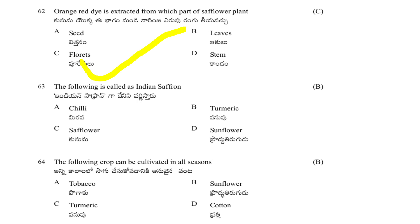Which of the following is called Indian saffron? Options: chilli, turmeric, saffron. Which crop can be cultivated in all seasons? Options: tobacco, sunflower, turmeric, cotton. The answer is sunflower — it can grow in all seasons because it is photo-insensitive in nature.